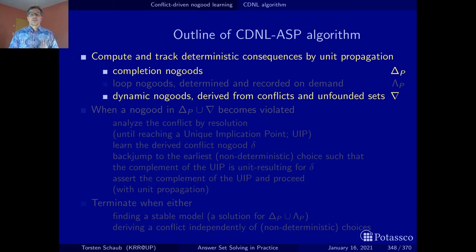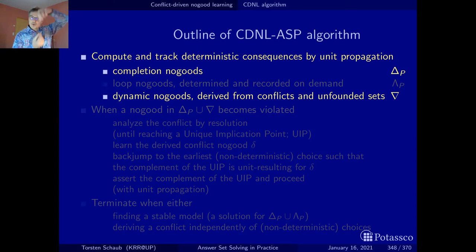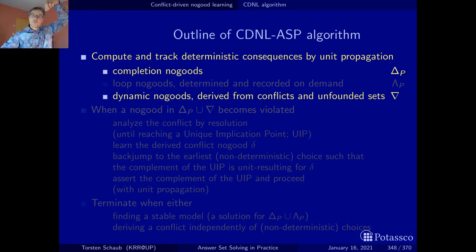You may now ask how to face this. The thing is, we only have to keep a linear number of no-goods in the system — those that we need to track the deterministic consequences. What we have to track are all the no-goods that have been used for unit propagation, and hence this is proportional to the number of literals in the assignment. Each unit resulting literal is associated with a no-good, and these no-goods must be kept in memory. The others we can — and must — forget, because there may be an exponential number in the worst case.